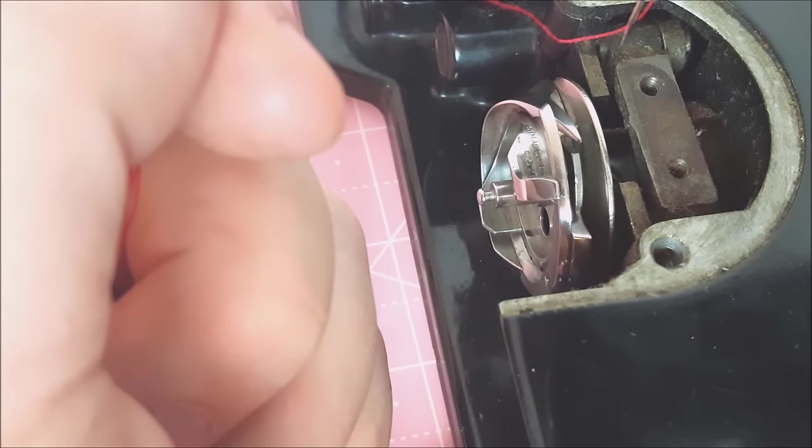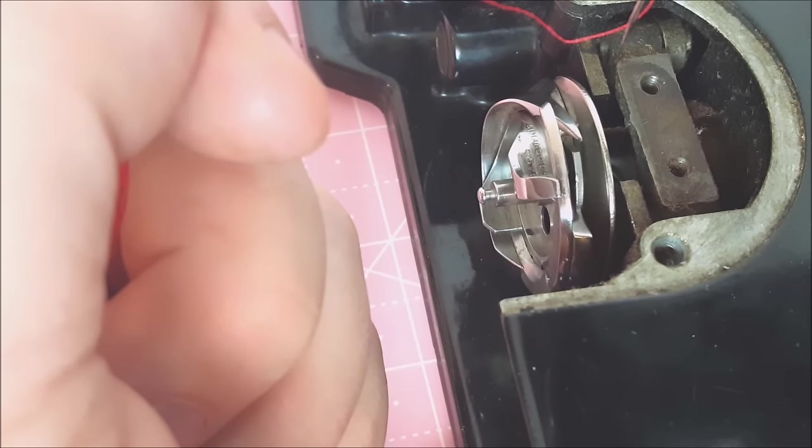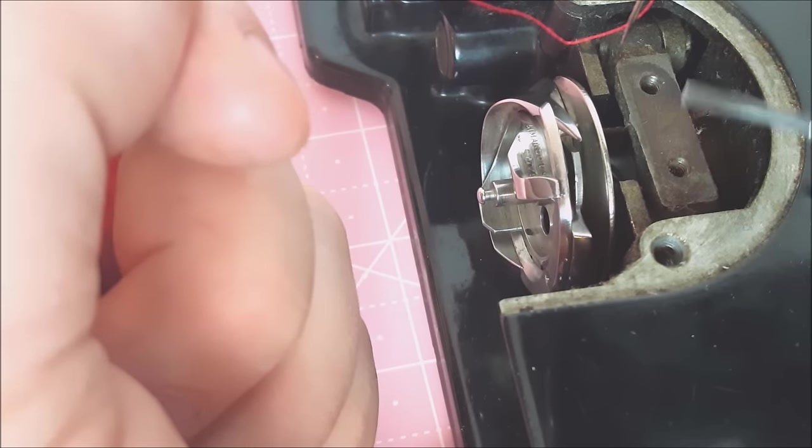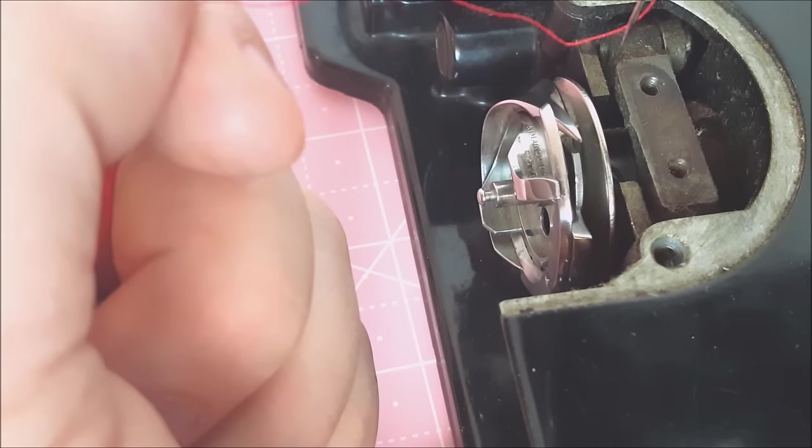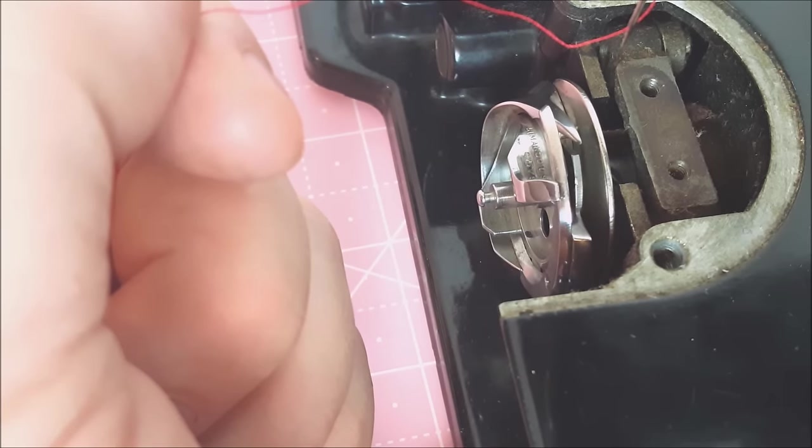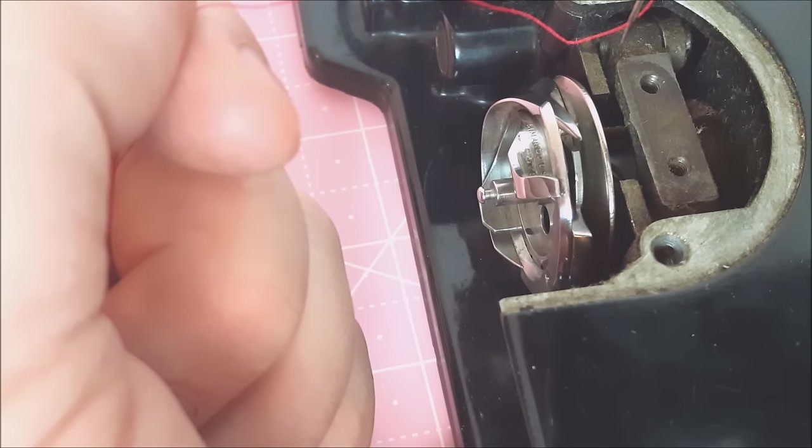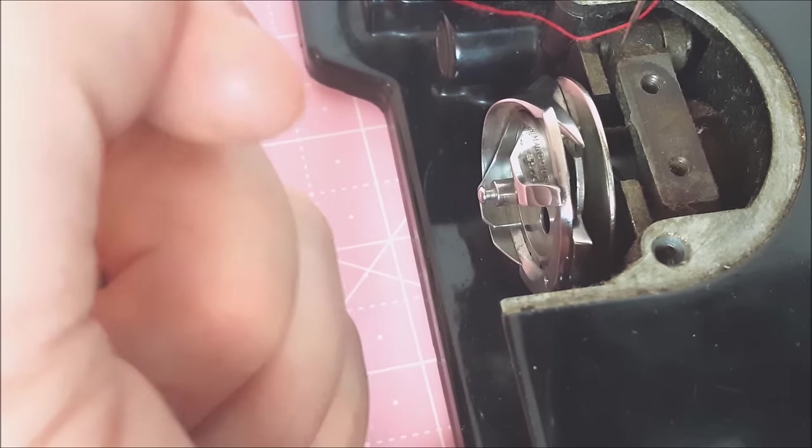Now I've got some pieces removed off of this featherweight just so that we can see what we're talking about here a little more clearly. I have the feed dogs removed and of course the needle plate. I also don't have a bobbin case in the machine. But I want to show you how a featherweight forms a stitch. I think it's kind of important that you know that because it helps a lot in troubleshooting.